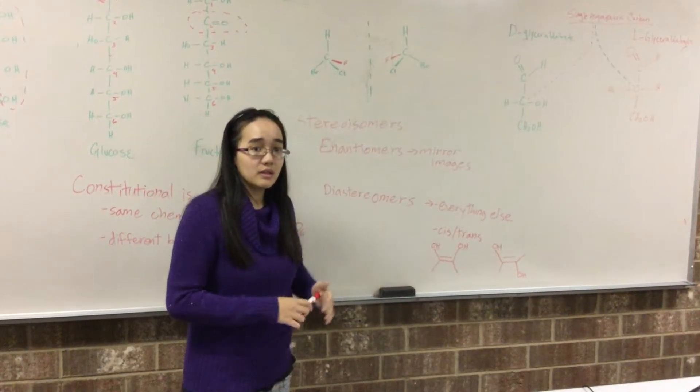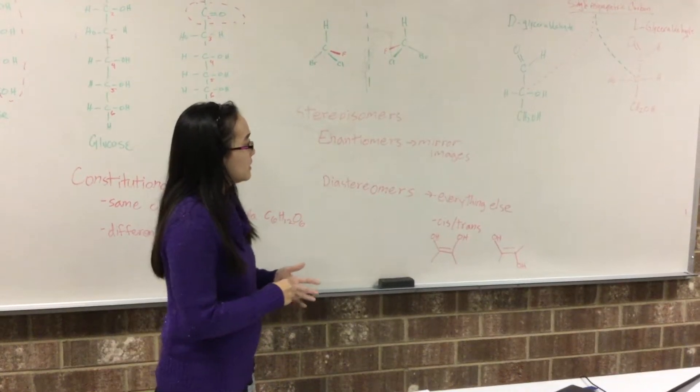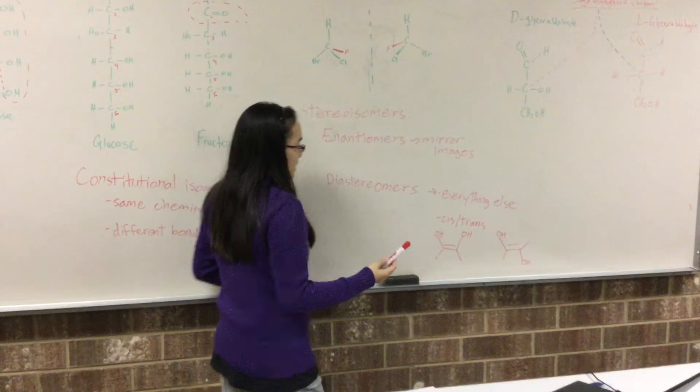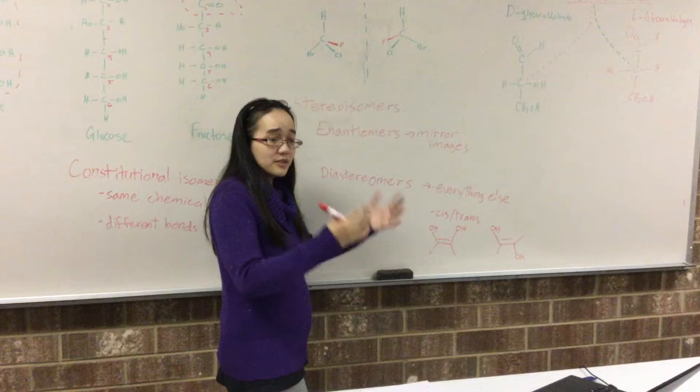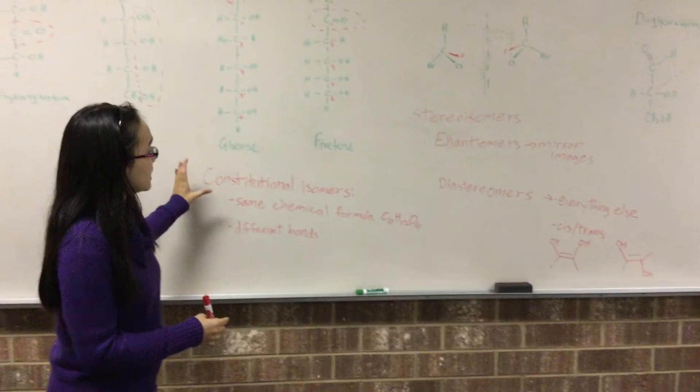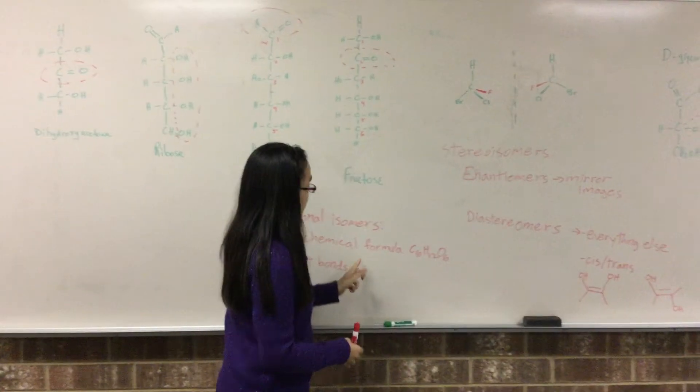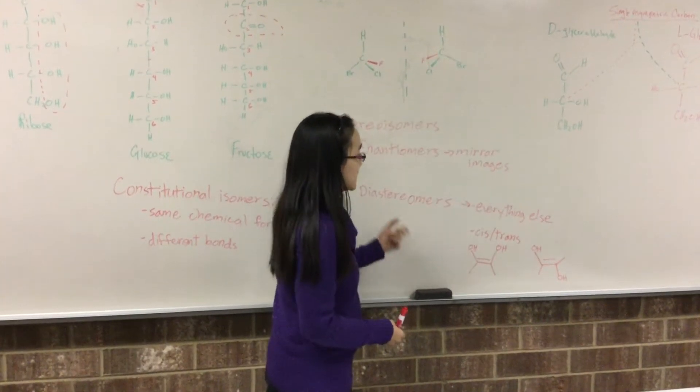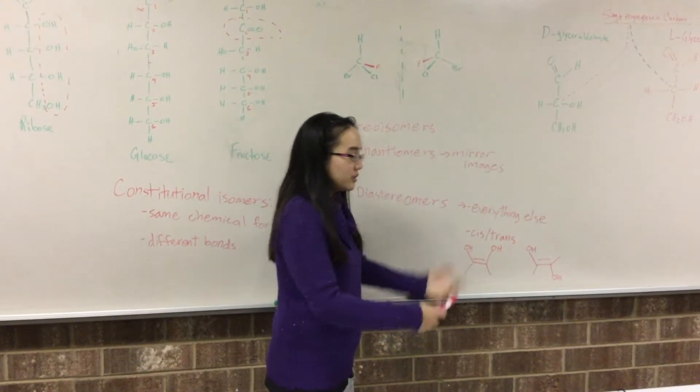So going back to diastereomers, diastereomers are basically everything else. If she gives you a molecule and you know that it's not a constitutional isomer (different bond, same formula) and you know it's not an enantiomer (mirror image), then it's gonna be a diastereomer.